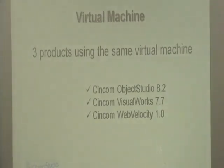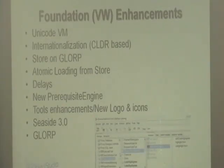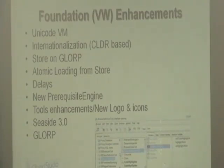We now have three products running on top of the VisualWorks virtual machine: Object Studio 8.2, VisualWorks 7.7, and Web Velocity 1.0, which was presented on Wednesday by Michael. The fact that we run on top of the VisualWorks VM means that many changes happening in VisualWorks also benefit the Object Studio environment and the Web Velocity environment.